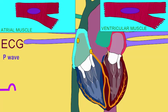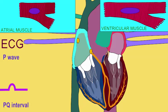Because cardiac muscle fibers undergo a plateau where the depolarization is prolonged, there are no new electrical events during the second half of the P-Q interval. The ECG returns to baseline.